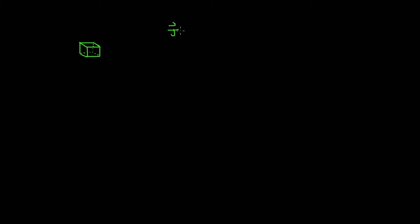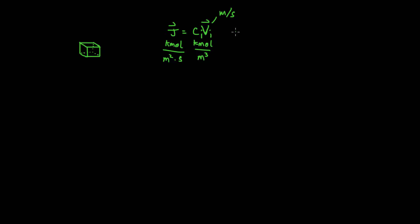If we have a small control volume and we want to calculate the rate of flux in the system, we can use Fick's law of diffusion, or if we know the densities and the velocities we can calculate it directly. The molar flux, in units of kilomole per square meter per second, is equal to the molar density in kilomole per cubic meter multiplied by the velocity of species I. This is applicable if the system is in a stationary state.